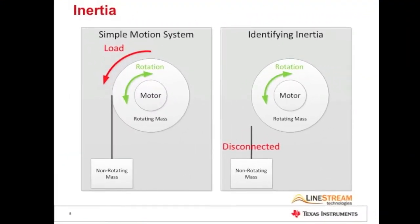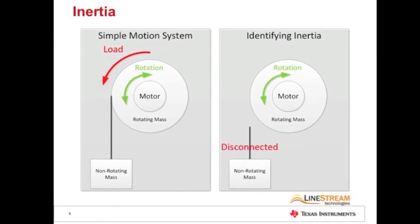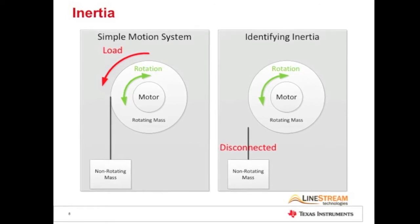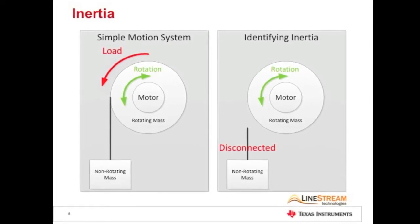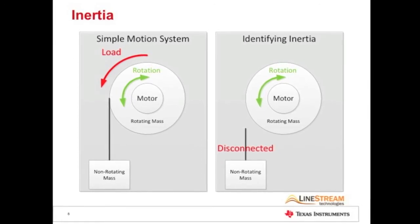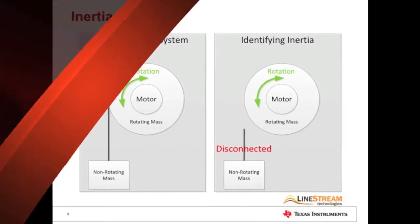The ADRC controller uses system inertia as an input. Inertia is the resistance of an object to rotational acceleration. Anything that is rigidly coupled with the motor shaft, for example, the drum of a washing machine. The controller uses this inertia to determine how strongly to respond to disturbances.